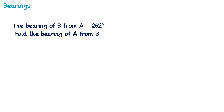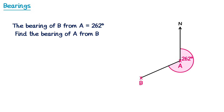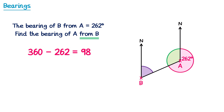Let's try a second example. This time the bearing of B from A is 262, and we're going to work out the bearing of A from B. Let's draw a sketch: start with A and a north line, and B is at 262 degrees, which is a little bit before 270 degrees (west). We draw a north line at B and turn to face A. We find the green angle: 360 take away 262 is 98 degrees. Then using co-interior angles, the purple angle and green angle add to make 180, so 180 take away 98 gives 82 degrees. The bearing is 082, given as three figures.